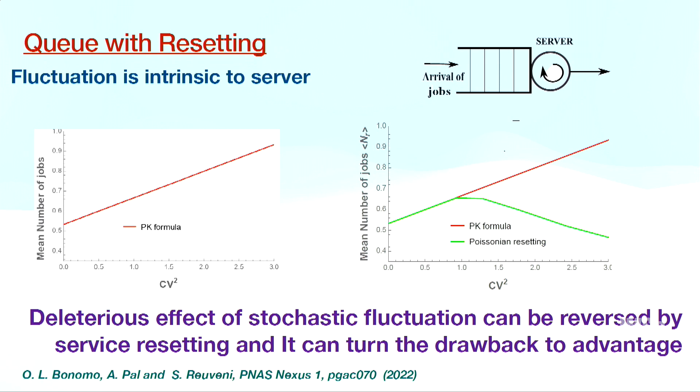There is a fluctuation in service time that can arise from a number of factors. If you have four bags of items and the next person has ten bags, service times cannot be equal. But here I am talking about when the fluctuation is intrinsic to the server — for example, if the cashier is serving for a long time, he or she may get tired, causing fluctuation in service time. What do we mean by server resetting? You reset the server by giving the cashier a coffee break and bringing a new service person in. This effectively decreases the mean queue length with the fluctuation.